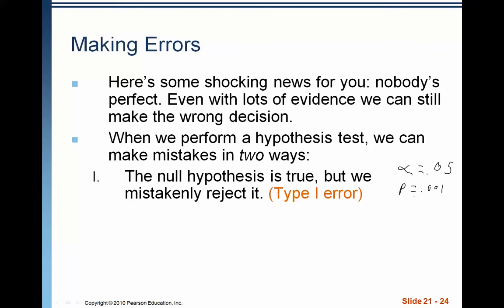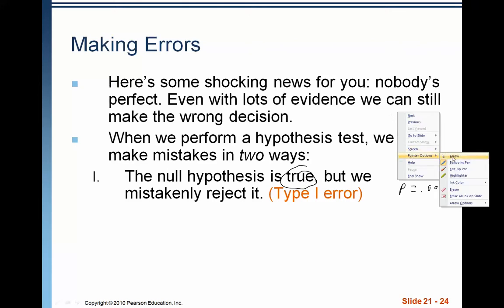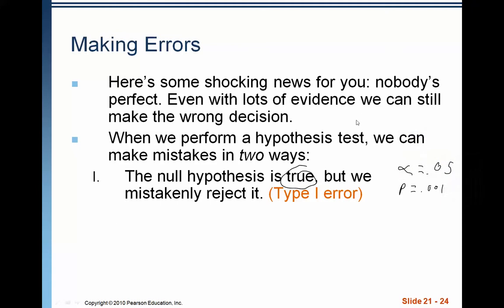A type 1 error is when we reject the null hypothesis, but it is actually a true statement. The null hypothesis is actually true and we rejected it, because what we actually saw was really just a very rare event. We reject the null hypothesis, but we shouldn't have, because it was true.